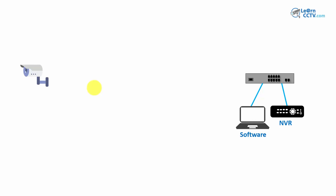Hello guys, this is Claudio Emery again with another video. Let's talk today about wireless transmission for CCTV. If you have a situation like this — you have your IP camera and you want to send the video to your central station where you have a software or an NVR to record your videos.